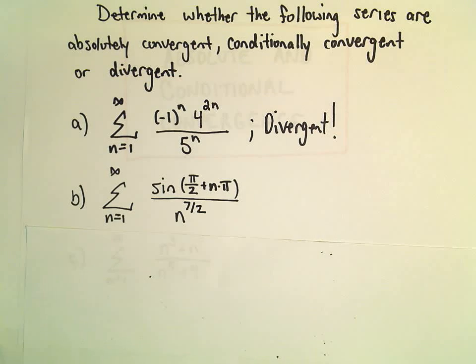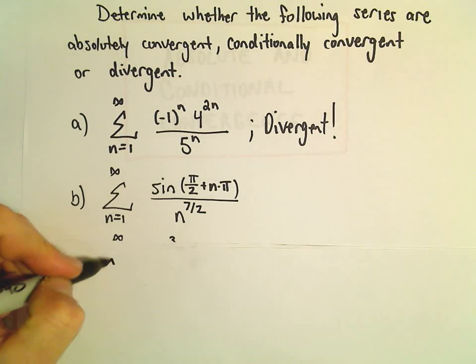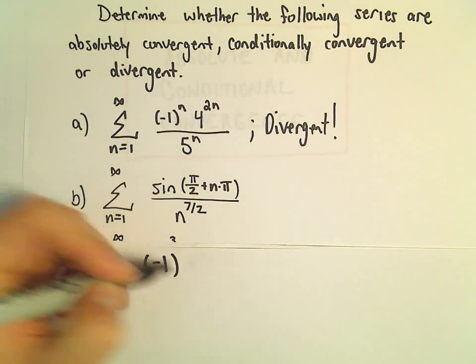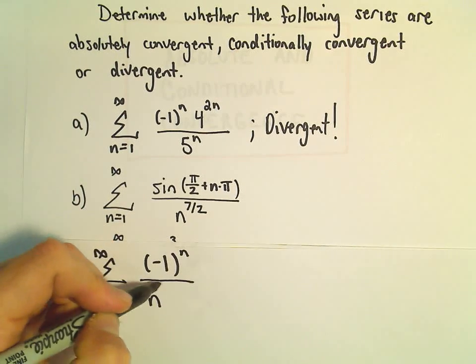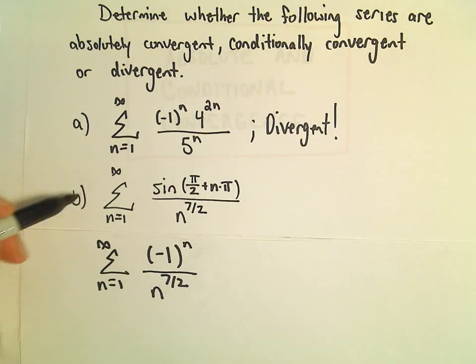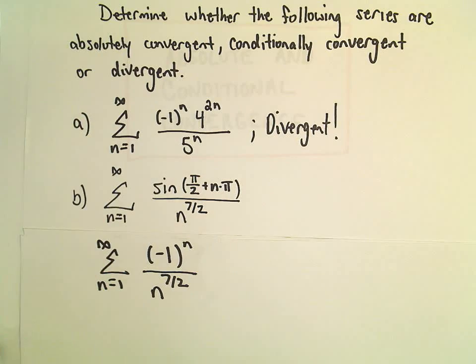So I'm just going to rewrite this series first off and make it a little bit more friendly. So we could write this alternating part as negative 1 to the n, and then n raised to the 7 over 2. So this series and the way it's originally written are exactly equivalent.